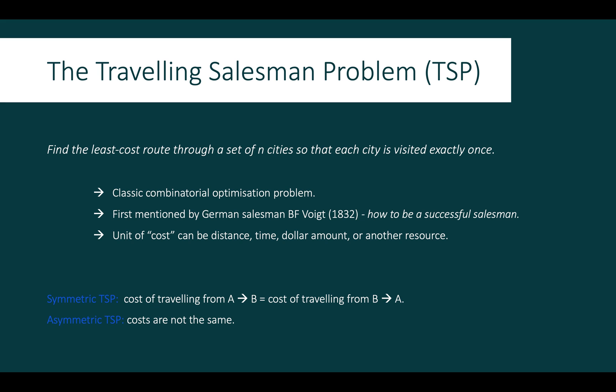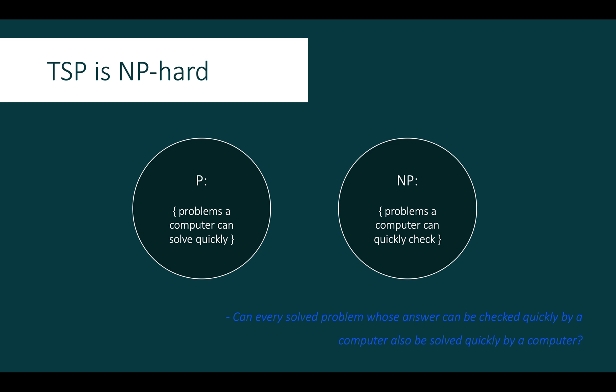Why is the TSP challenging to solve? Despite having been studied for so long, the TSP is currently, in practice, very computationally challenging to solve. In computer science terms, it's known as an NP-hard problem. To understand what this means, we will first consider the difference between P and NP.